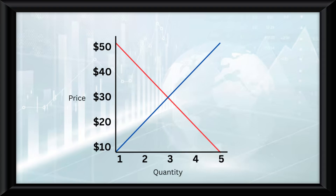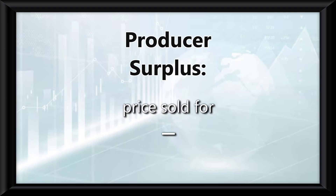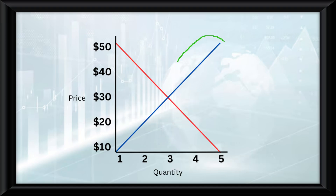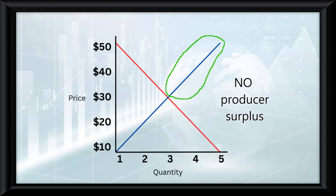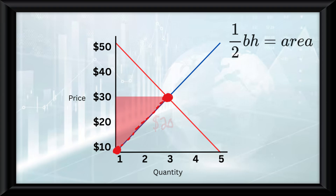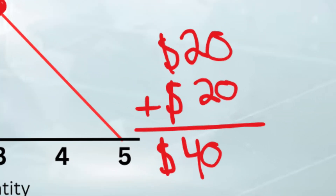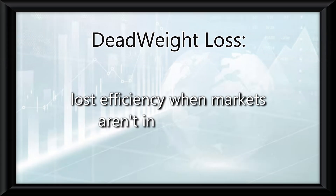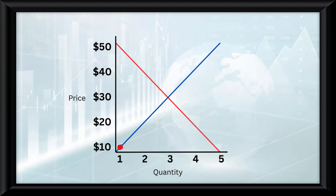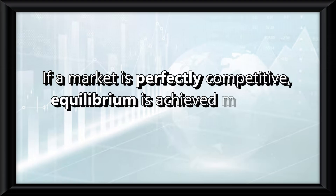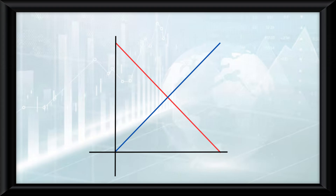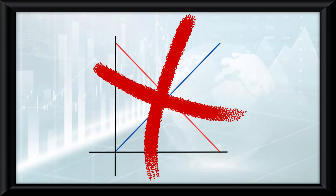The same concept applies to the supply curve. If the seller wanted to sell the product for $10 but it was actually sold for $30, the market equilibrium, that difference of $20 is the producer surplus — calculated as the price sold for minus what the sellers are actually willing to sell it for. The producer surplus triangle plus the consumer surplus triangle gives us total surplus. Deadweight loss refers to the loss of efficiency when markets aren't in equilibrium. If a market is perfectly competitive, equilibrium is achieved, meaning there are no shortages or surpluses. Though this model is used in most markets, some markets can't use it because of imperfections like ethical concerns.